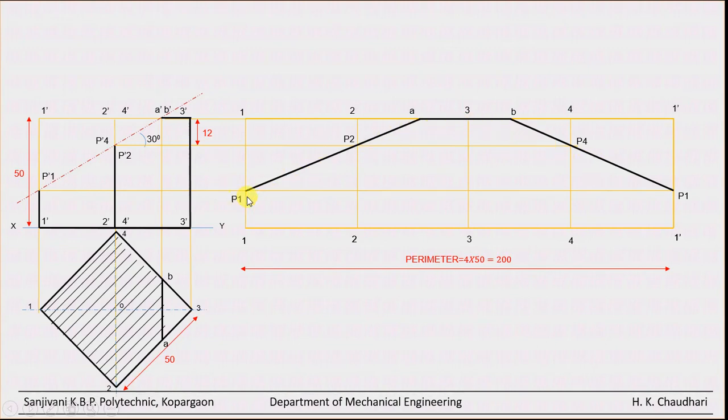And join them all the points by straight line. This is the development. Now the remaining edges, you can draw by thick line. So outline you can draw in this way. This is the development of the remaining cube. So I hope you understood this problem. Thank you.